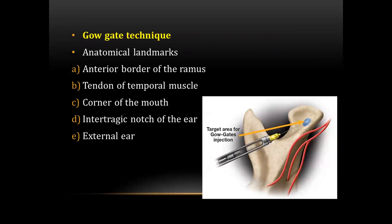The next question was an image-based question in which a diagram of the Goget technique was given. It is a mandibular nerve block technique. The anatomical landmarks are the anterior border of the ramus, tendon of the temporal muscle, corner of the mouth, intertragic notch of the ear, and external ear.